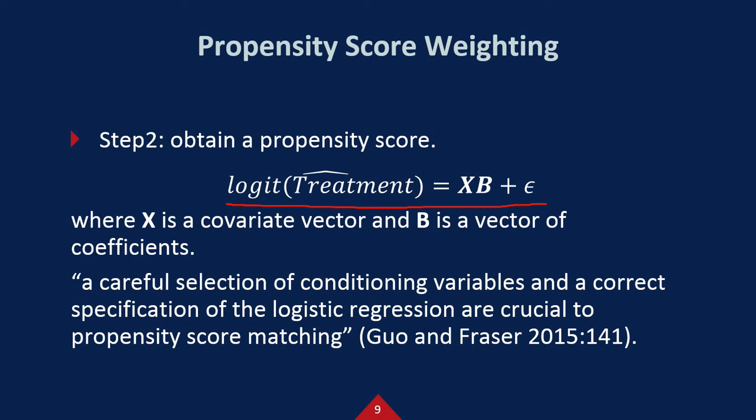This procedure is crucial because propensity score analysis can address observed heterogeneity only, which means that unobserved heterogeneity is not addressed using this procedure.